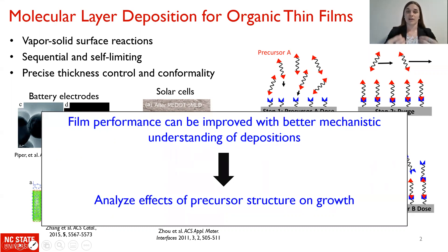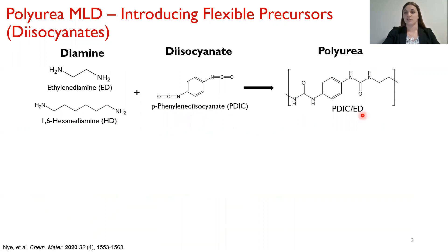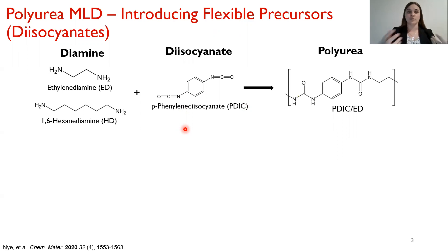In this study, we seek to develop this mechanistic understanding by analyzing how different precursor structures can affect growth. We focus on polyurea molecular layer deposition, which is deposited from diamines and diisocyanates. Here I have shown two potential diamine reactants — one more flexible than the other — and the traditional diisocyanate reactant used, phenylene diisocyanate, to form polyurea. This diisocyanate is almost always used in MLD for polyurea. However, it has very low vapor pressure; it's a solid at room temperature, leading to practical hardware issues with valve clogging, and requires heating to be able to vaporize it enough to use in your MLD process.